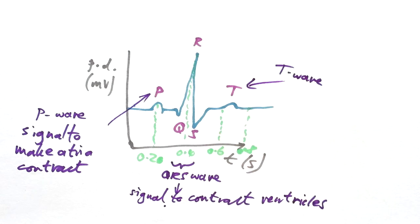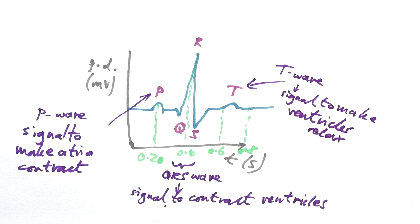And there's actually one more as well. The T wave is actually a signal that tells the ventricles to relax, ready for the whole thing to start again so blood can go from the atria into the ventricles again.